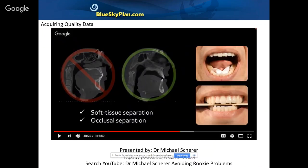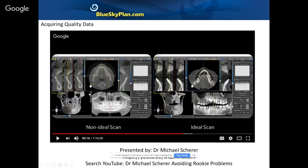Regarding proper data acquisition, one key recommendation from Dr. Michael Scherer's presentation is avoiding soft tissue separation from the teeth and occlusal separation during the CT scan. We can see how this affects the CT output: on the left, soft tissue is merged together; on the right, the anatomy is much more distinct and defined. We'll also discuss software functionality that demonstrates why having the patient's mouth open even slightly during the CT scan helps us isolate the different jaws for treatment planning.